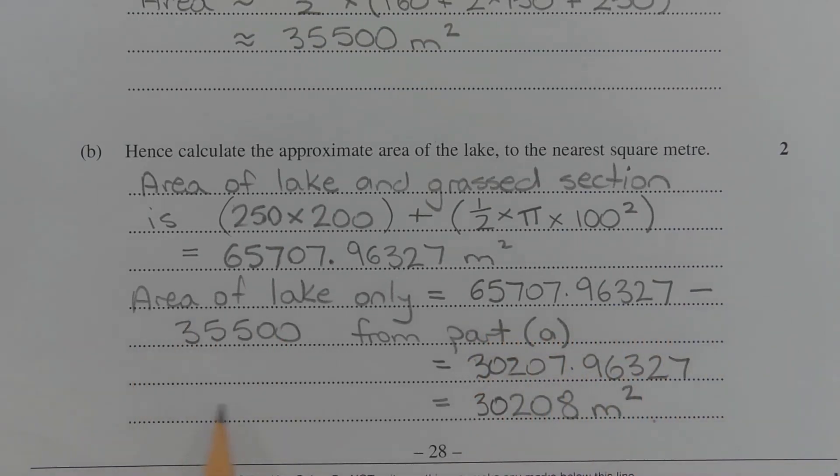Now minus the area of the grassed section which we found from part A. So 65,707.96327 minus 35,500 equals 30,207.96327, which rounds to 30,208 square metres correct to the nearest square metre.